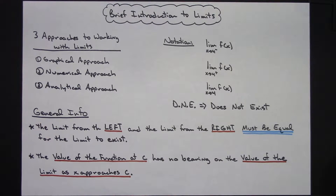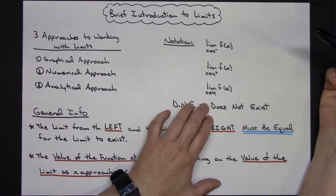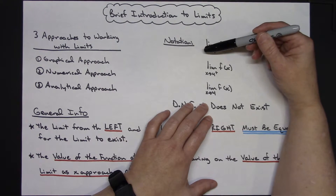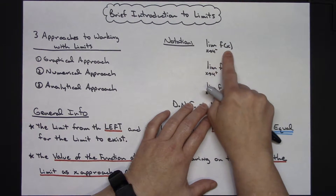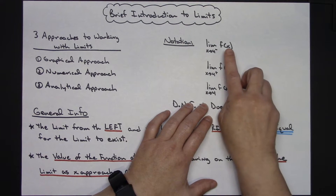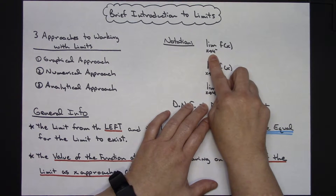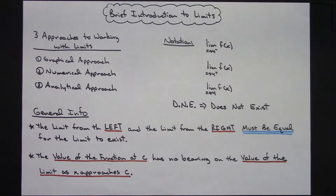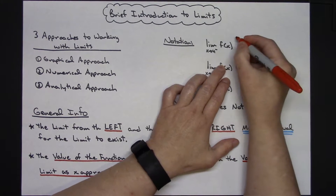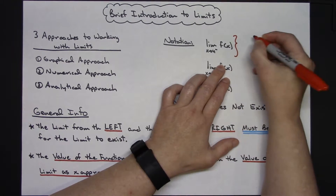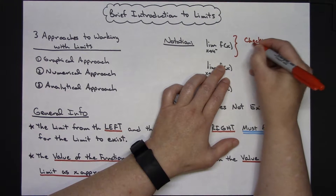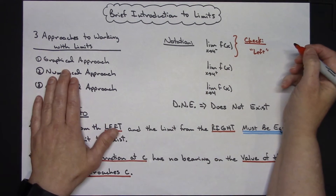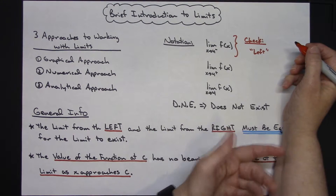Before we get started, there is some notation you need to know with limits. This is read: the limit as x approaches 4 from the left of f of x. That would mean we're trying to find the limit of our function as x approaches 4 from the left — it's a one-sided limit, and we are going to be checking from the left. Using a graphical approach becomes very simple because we're going to be looking from the left.